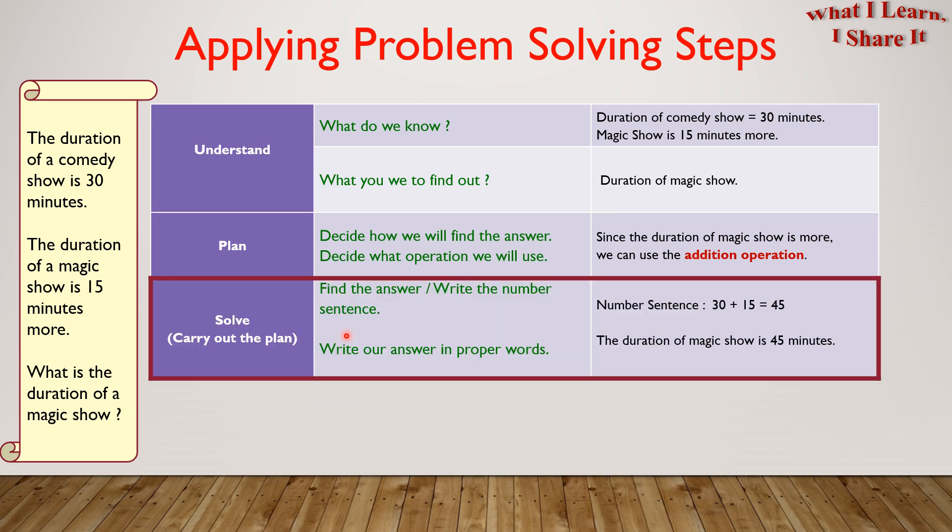The third step is to solve. In this we will write a number sentence and find the real answer. The number sentence here is 30 plus 15 equals 45. Then we write our answer in proper words like this. The duration of the magic show is 45 minutes.